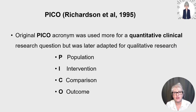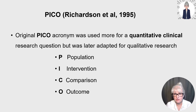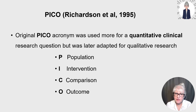The original PICO tool came from Richardson et al in 1995, and if you need the full reference it's provided at the end of the video. This PICO acronym relates to the key elements of a clinical research question that includes patient, intervention, comparison, and outcome. Later the letter T was added for time or type of study. The original PICO acronym was used more for quantitative research questions, so I'm going to start with the original tool and present a quantitative research question using the tool.